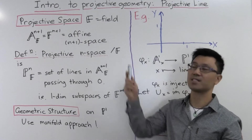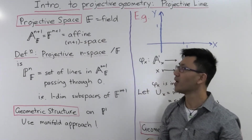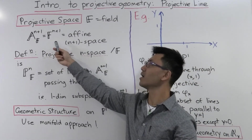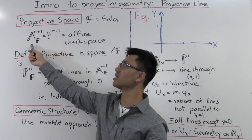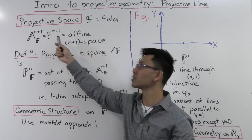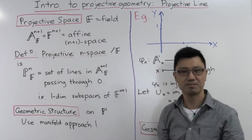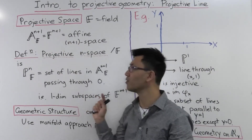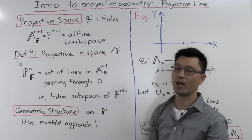To set things up, we need to start with a field, which I'll denote with this double-barrel F. And we want to have a look firstly at affine space, usually denoted like this. It just means the set of all n plus one tuples with entries inside this field F. And once we have this, it's very easy to define what projective n-space is over this field F.